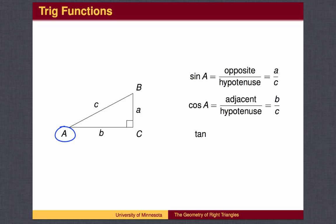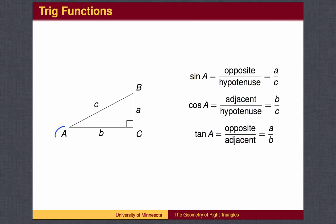The cosine of angle A is the length of the leg adjacent to angle A divided by the length of the hypotenuse. In this case, the cosine is b divided by c. Cosine is abbreviated C-O-S. The tangent of angle A is the length of the leg opposite angle A divided by the length of the leg adjacent to angle A. In this case, the tangent is a divided by b. Tangent is abbreviated T-A-N.